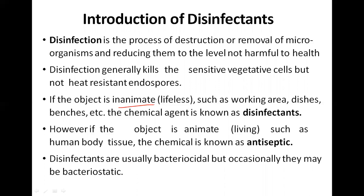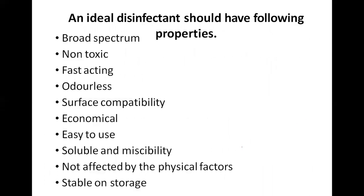Disinfectants kill sensitive vegetative cells but not heat-resistant endospores — they are not 100% effective. If the object is inanimate such as working areas, dishes, or benches, the chemical agent is known as a disinfectant. If it is a living object it is termed an antiseptic. Disinfectants are usually bactericidal but occasionally they may be bacteriostatic.